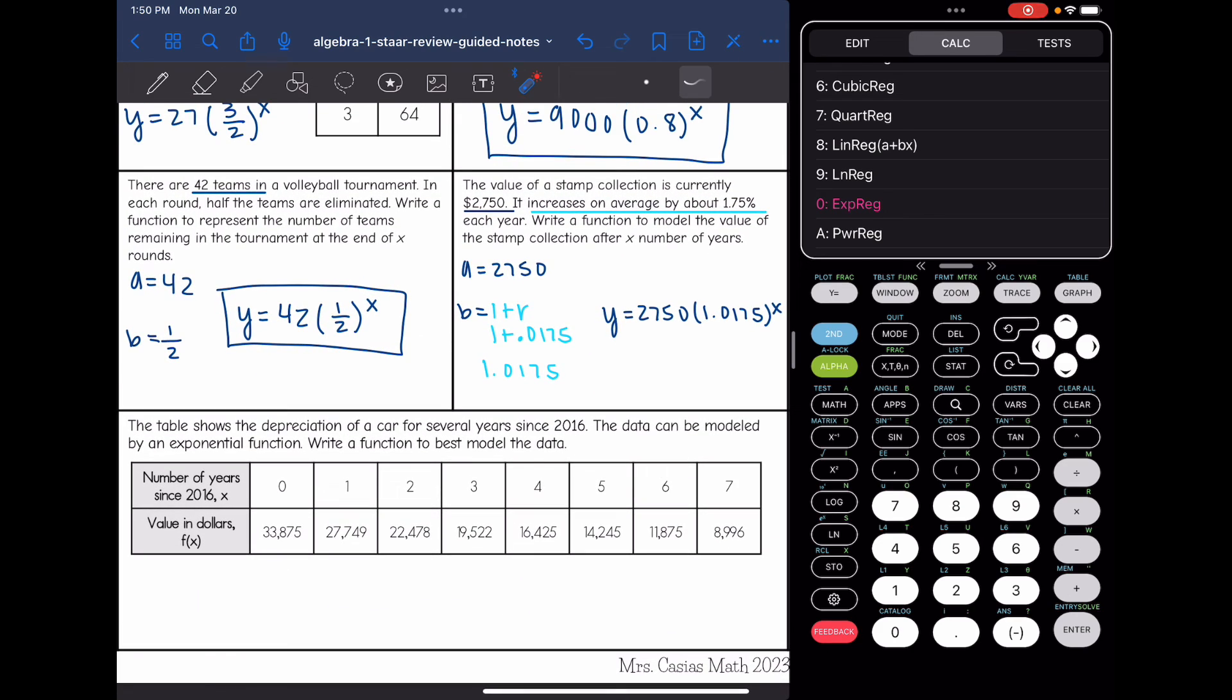So let's look at this problem. It says the table shows the depreciation of a car for several years since 2016. The data can be modeled by an exponential function. So they will either tell you that it's exponential or you'll see it in the answer choices because the exponents will be x and that's how you know to use zero exponential regression. And they want us to write a function to best model the data. So I'm just going to enter the data in stat enter.